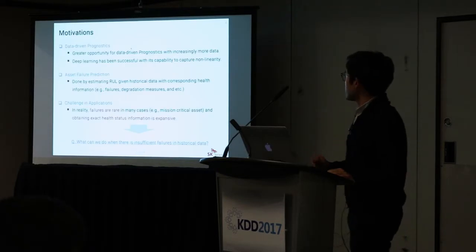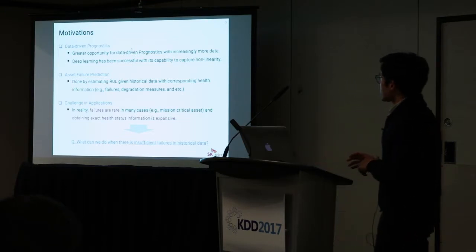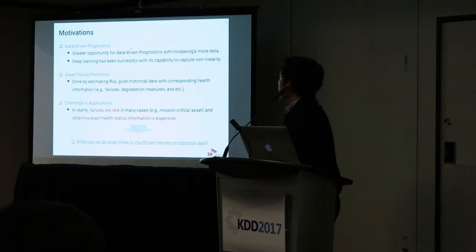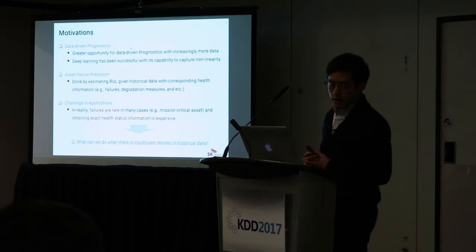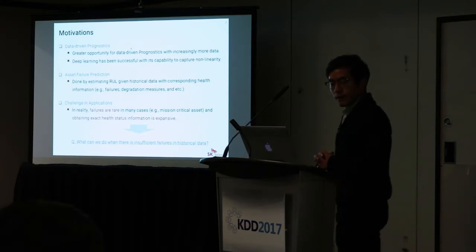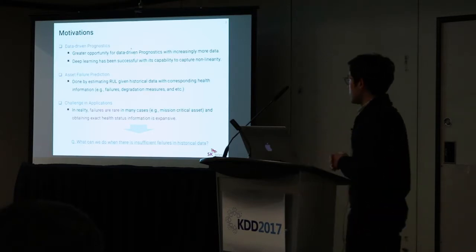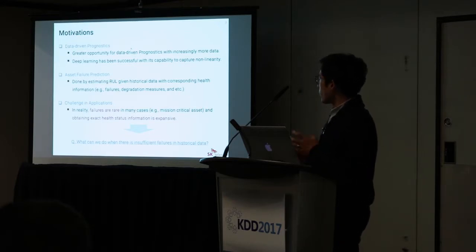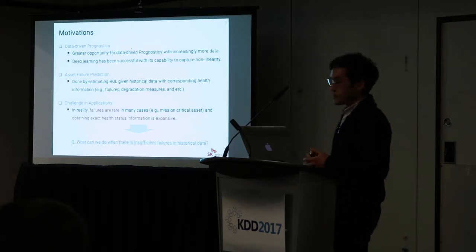Here is our motivation. There is greater opportunity for data-driven prognostics with increasingly more sensor data available. Deep learning has been successful with its capability to capture non-linearity in massive data. Over the past few years we've seen several interesting deep learning applications in our field. Asset failure prediction is an important industrial application that can be done by estimating RUL given historical data with corresponding health information.